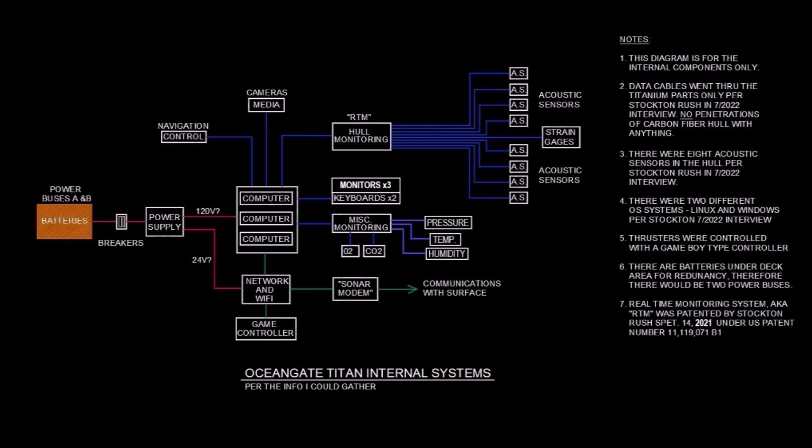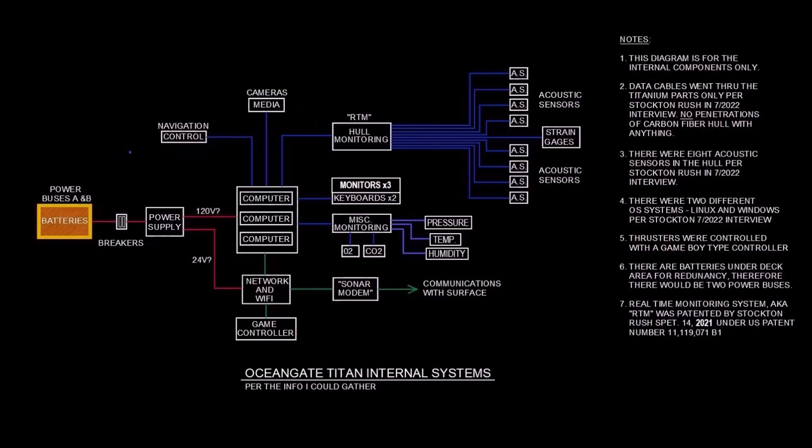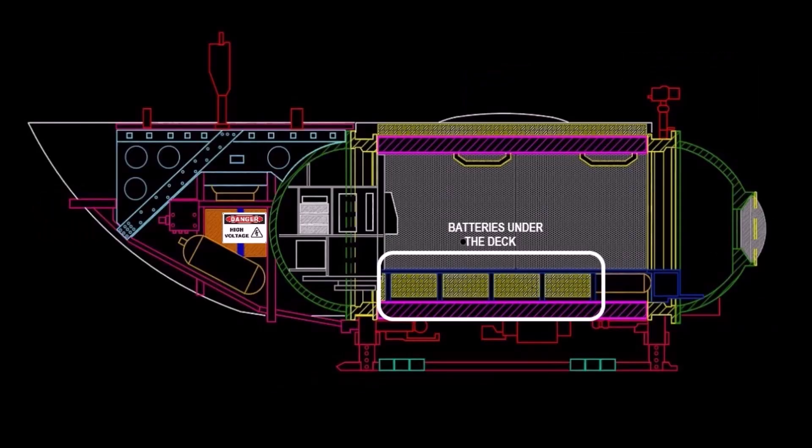Moving on to the interior systems, I know even less of the details, but I have enough info to put together a block diagram. Once again, we start with the batteries that were hidden under the deck. I believe they were strictly for the internal systems, such as computers, lighting, the fan on the box of sodasorb, which is calcium hydroxide. I assume they were also 120 volts, since that is what computers in the U.S. are designed to operate on. There were probably also a power supply that provided a lower voltage to peripherals, but I'm not sure. As with the batteries in the tail, I imagine there was redundancy built in with two power buses and a set of breakers.